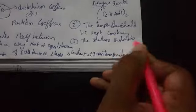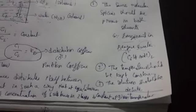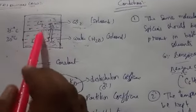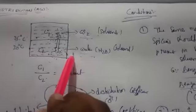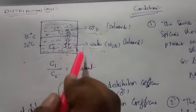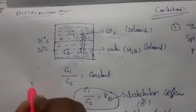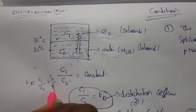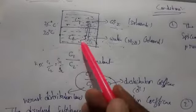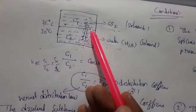The solution should be dilute. When you take higher concentrations, adding more solute molecules causes deviation. The partition coefficient is given as Kd = c₁/c₂ = s₁/s₂ for dilute solutions. At larger concentrations, there will be more deviation. These are the three conditions for the distribution law. Now let us see the applications of distribution law.